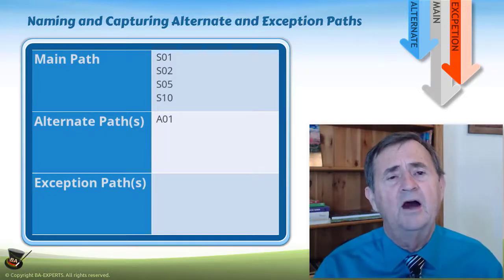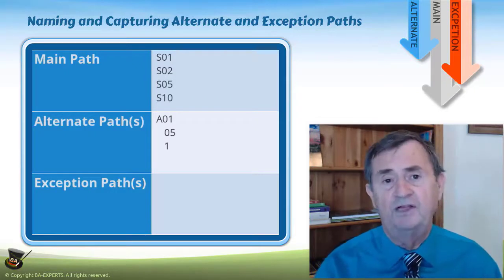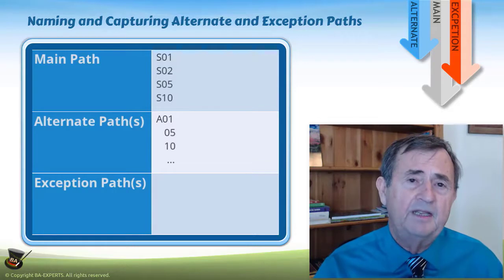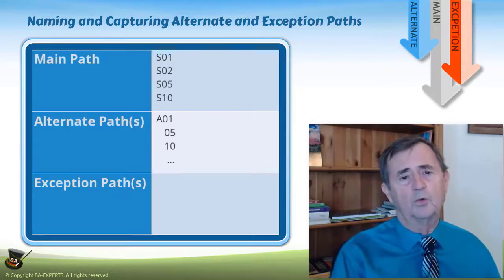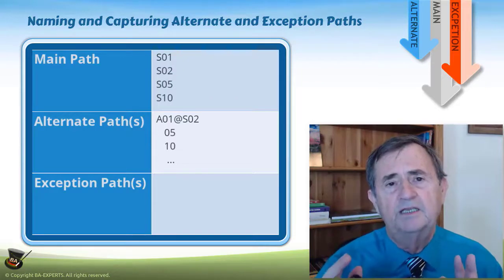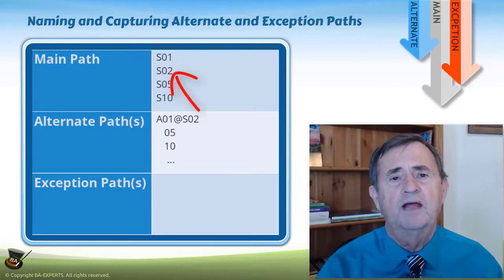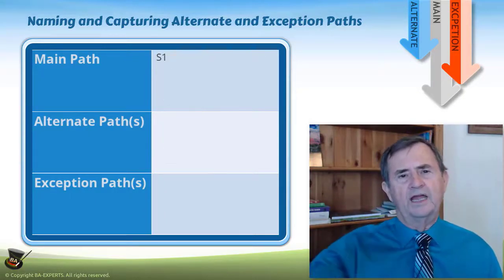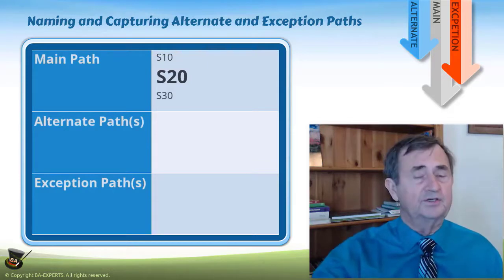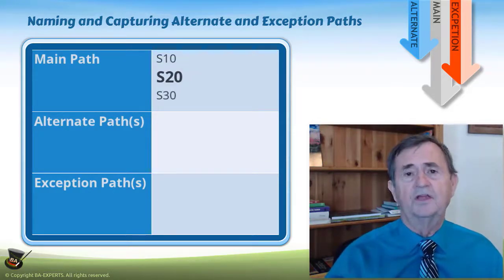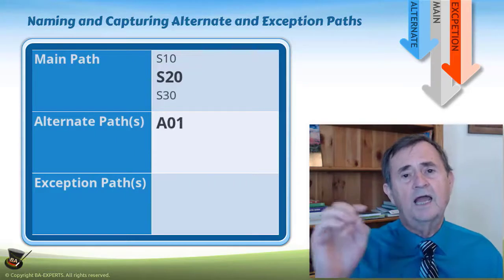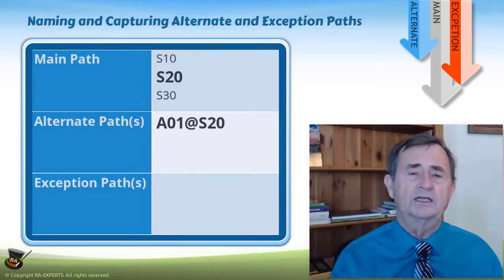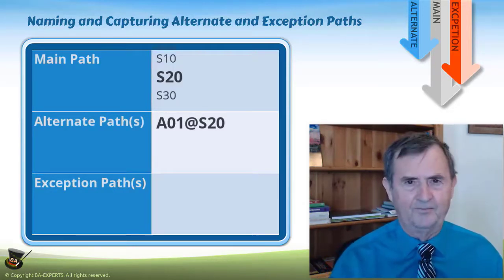Within an alternate path, all of the steps are numbered — A01-5, A01-10, and so on. The naming of the alternate path includes A01 followed by the at sign (@), which indicates where in the standard path this alternate is recognized. For example, if I am going through my standard path at step 20 and I recognize a condition that requires deviation, it's going to be A01@S20. I then specify under what circumstances or what condition caused me to create this alternate path.